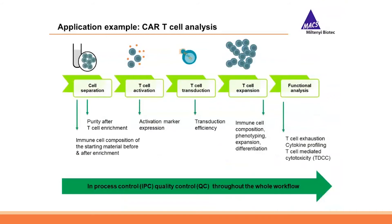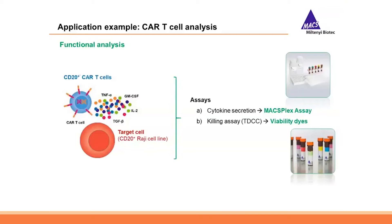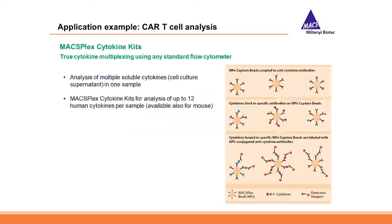As a final step of the CAR T-cell workflow, every researcher wants to know if their CAR T-cells are functional and able to efficiently kill the respective antigen-expressing target cell. This is achieved by a co-culture assay of CAR T-cells and the target cells. In this experiment we co-cultured CD20-directed CAR T-cells with the CD20-positive Raji T-cell line. From such co-culture assays we can obtain two results: we can measure the amount of secreted cytokines and we can also measure T-cell mediated target cell killing.